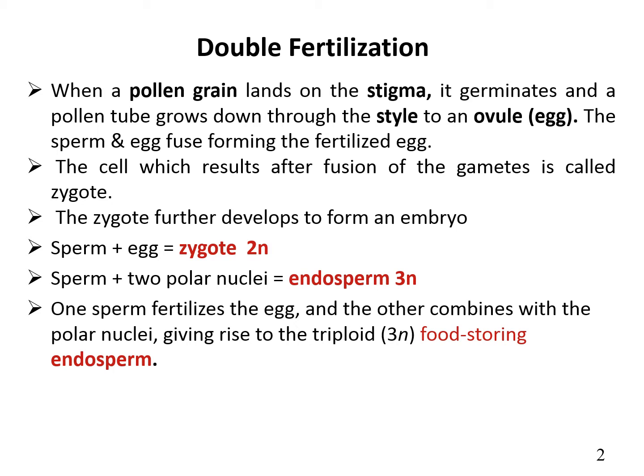When a pollen grain lands on the stigma, it germinates and the pollen tube grows down through the style to the ovule. The sperm and egg fuse, forming the fertilized egg. The cell which results from the fusion of the gametes is called a zygote. The zygote then further develops to form an embryo. Sperm plus egg form zygote, which is 2N.